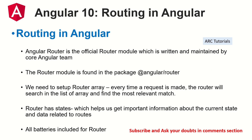The Router has states. State is a way to get information about the current state and the active state, or data related to it — for example, activated routes and route state, which you can inject and retrieve. Everything you need to work with the Router is already included in this module. For example, getting data related to a route, getting query params, getting URL segments, watching for changes on a route on load — all of that is included in the Router module.